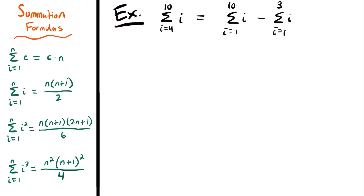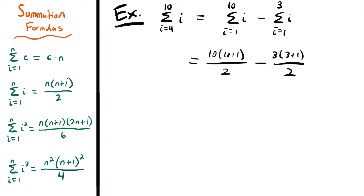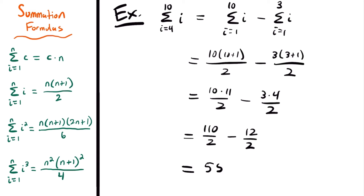Using our summation formula for both sums: for n equals 10, we get 10 times 11 divided by 2; minus for n equals 3, we get 3 times 4 divided by 2. This equals 110 divided by 2, minus 12 divided by 2, which is 55 minus 6, which equals 49. That is the answer. While adding 4 through 10 manually would work here, if you're asked to use these summation formulas, this is how you do it.